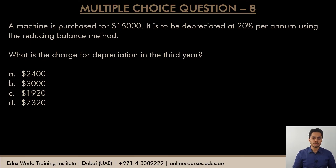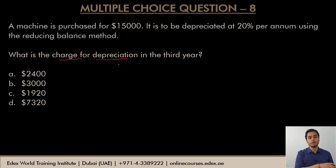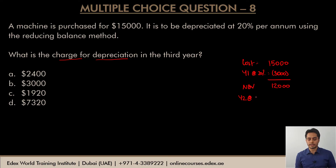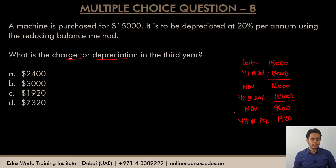A machine is purchased for $15,000 to be depreciated at 20% per annum using the reducing balance method. What is the charge for depreciation in the third year? Year 1 depreciation: 20% of $15,000 = $3,000. Net book value at end of year 1: $12,000. Year 2 depreciation: 20% of $12,000 = $2,400. Net book value at end of year 2: $9,600. Year 3 depreciation: 20% of $9,600 = $1,920. The correct option is option C.